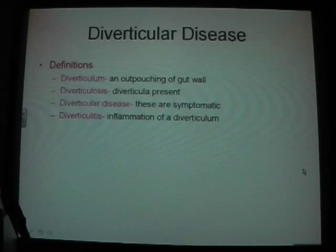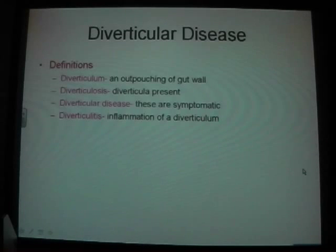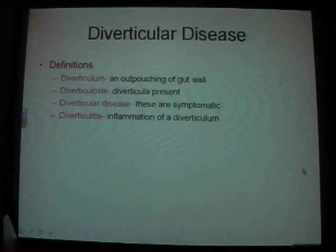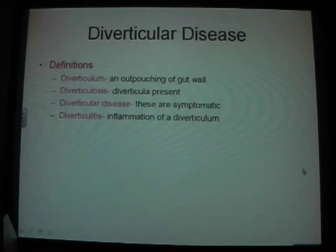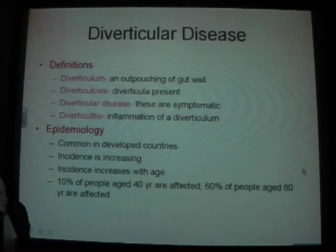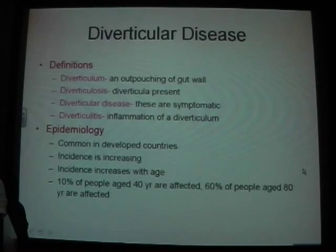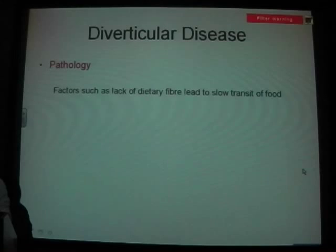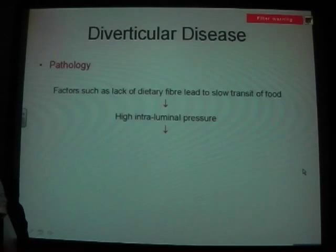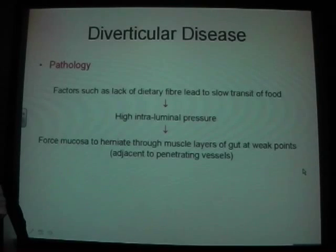Diverticular disease — there are four related definitions. A diverticulum is an outpouching of the gut wall. Diverticulosis is the presence of diverticula. Diverticular disease is when these are symptomatic, such as causing constipation. Diverticulitis is inflammation of the diverticula. It's more common in developed countries and its incidence is increasing, occurring mainly in older people. The pathology: lack of dietary fibre leads to slow transit of food, leading to high pressure in the bowel, which forces mucosa through the muscle layers of the gut at weak points.